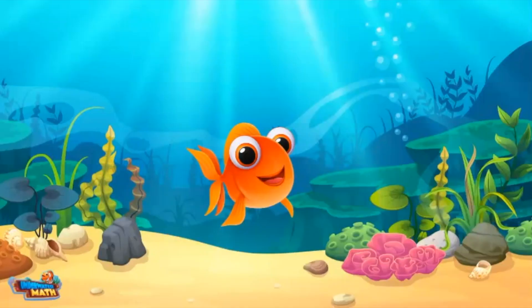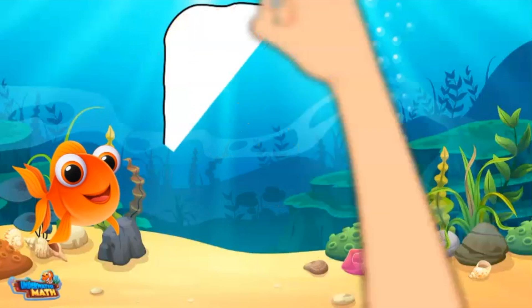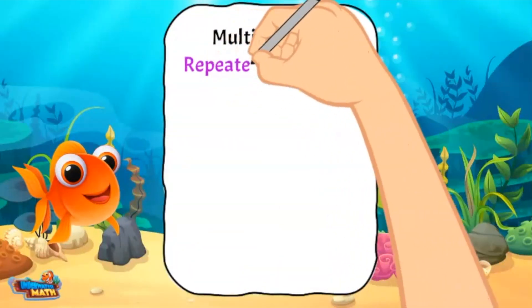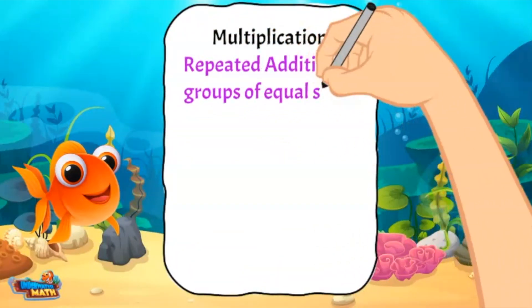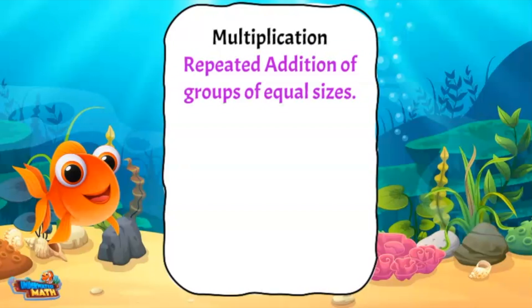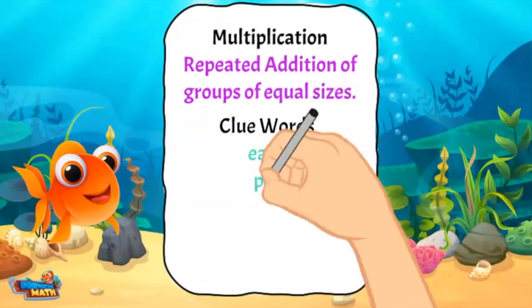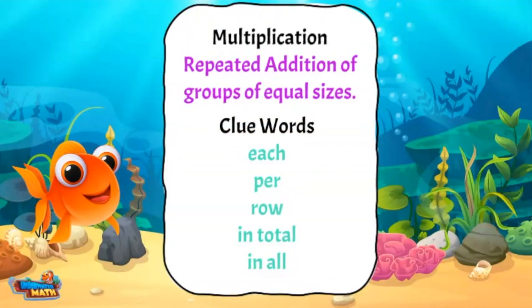Hi boys and girls! Today we will explore one-step multiplication word problems. Multiplication is the repeated addition of groups of equal sizes. When solving word problems involving multiplication, we look for clue words like each, per, row, in total, and